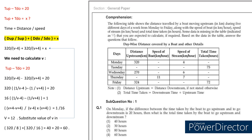Starting with the first question: on Monday, if the difference between the time taken by the boat to go upstream and to go downstream is 20, this becomes the first statement. I will convert this into an equation. Whatever is written in red color is derived from the comprehension or question. According to the first statement, it becomes T_upstream minus T_downstream equals 20. For the second statement, they ask for the total time taken to go upstream and downstream, so we need to calculate T_upstream plus T_downstream equals X. We cannot directly calculate time, so we convert the equations into distance-by-speed form.